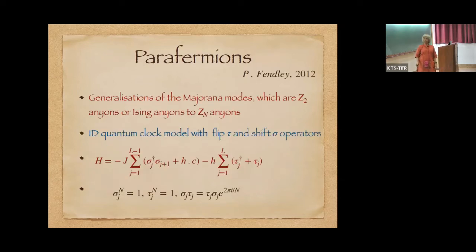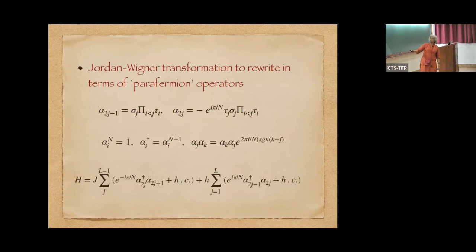And so in that context, we wanted to look at what parafermions do. They are generalizations of Majorana modes to Zn anyons. These are Z2 anyons and these are Zn anyons. And the simplest model, the analog of the Kitaev 1D model for parafermions is something called the 1D quantum clock model with flip and shift operators. These are, in an Ising model, these would be the sigma Z operators, these would be the sigma X operators, and here we have called them sigma and tau operators. And this is the commutation relation which is satisfied by these.